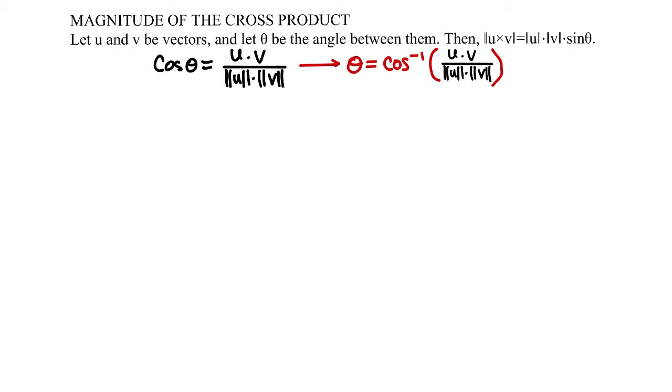We also know that cosine of theta equals the dot product of u and v divided by the product of the magnitudes of u and v. We can take the inverse cosine to find the angle itself.